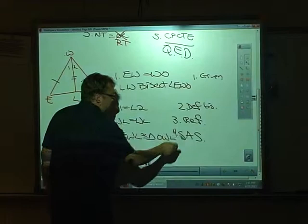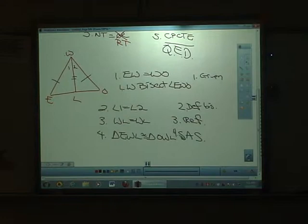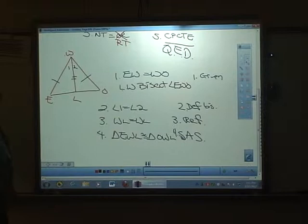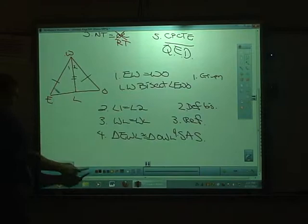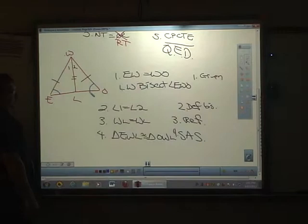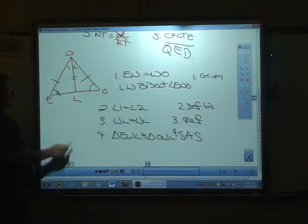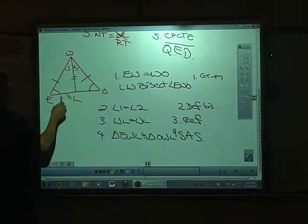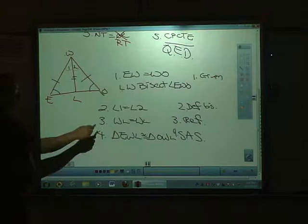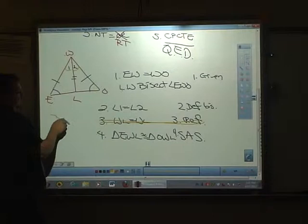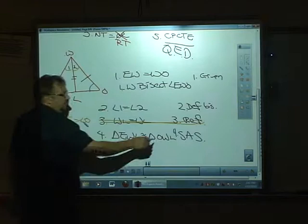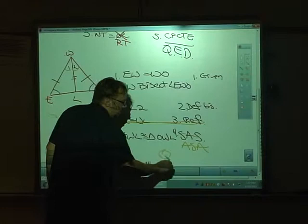Triangle EWL must be congruent to triangle OWL by side-angle-side — step four. Now, some of you may notice I didn't actually need the reflexive step. Since those two sides EW and WO are the same, and angle 1 equals angle 2, I could say angle E equals angle O instead, and then use angle-side-angle: this angle and this angle, this side and this side, this angle and this angle — congruent by angle-side-angle. Both ways work; either one is perfectly acceptable.